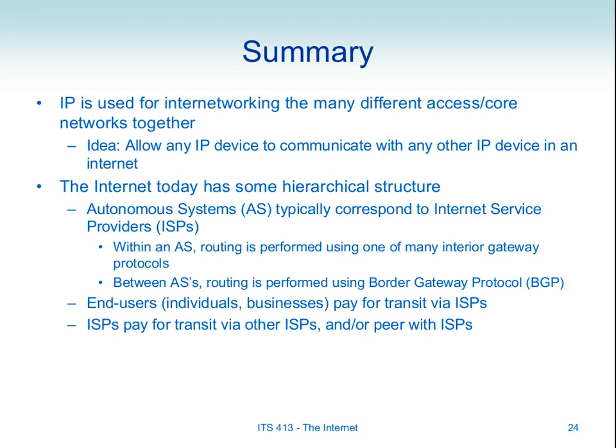That summarises what we know about the internet. What I want you to pick up from this topic: autonomous systems, the difference between interior and exterior routing or gateway protocols — BGP versus the others — the concepts of peering between different autonomous systems, the physical connections we can have between them (direct private peering and shared public peering), and the types of agreements — transit and peering agreements.